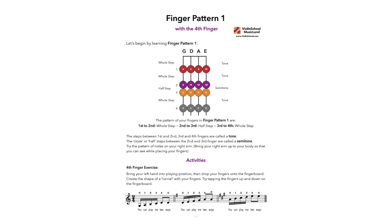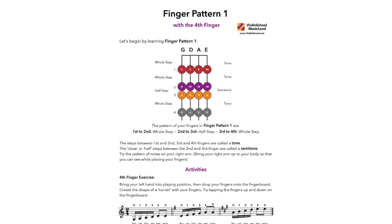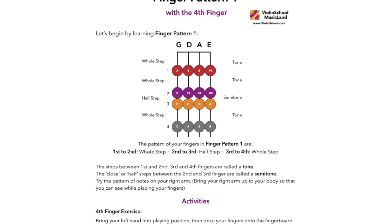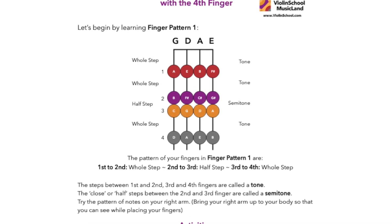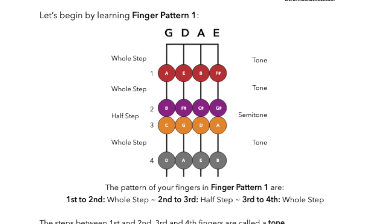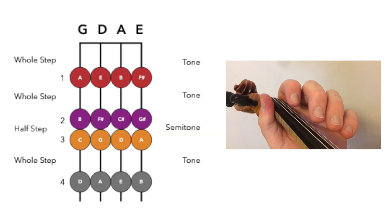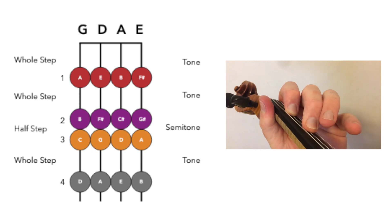The colored grid is a visual representation of where you need to put your fingers. The red circles represent the notes played by the first finger. The purple circles are the notes played by the second finger. There's a space of a whole step or a tone between the first and the second finger notes.